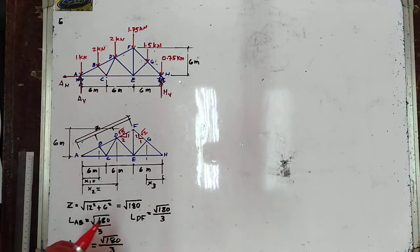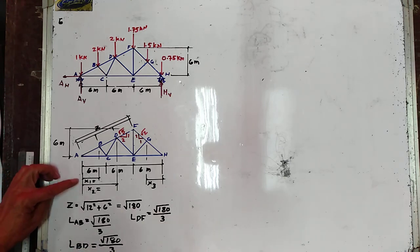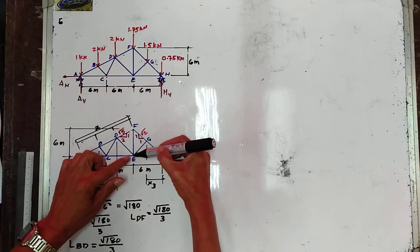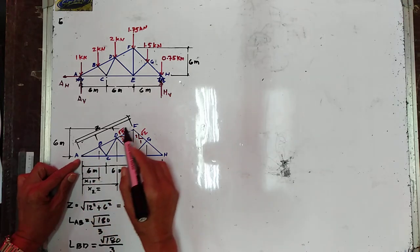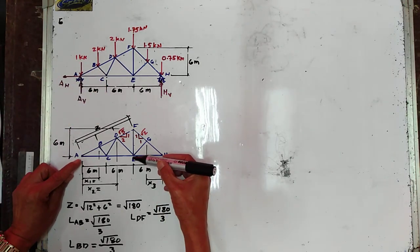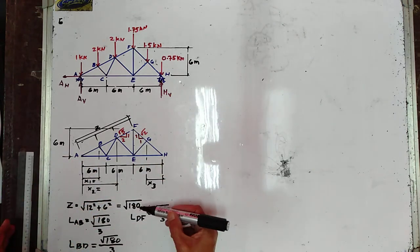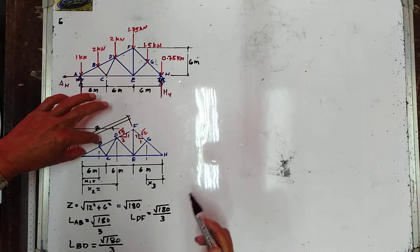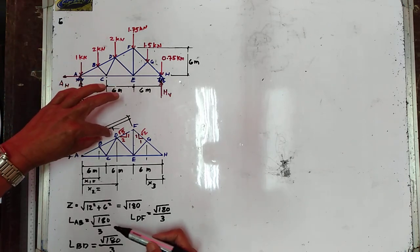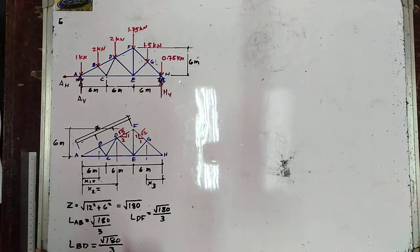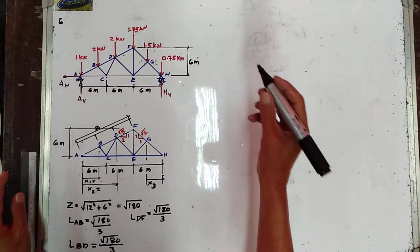First, let's determine the values of X1, X2, and X3. Considering the triangle, let us determine the distance from point A to point F and call it Z. So Z equals the square root of 12 squared plus 6 squared, which is the square root of 180. Hence, the length of AB equals the square root of 180 over 3, BD equals the square root of 180 over 3, and DF equals the square root of 180 over 3.